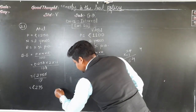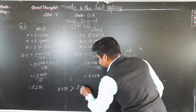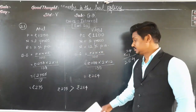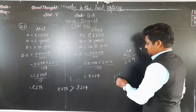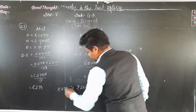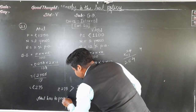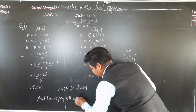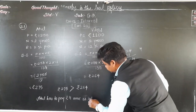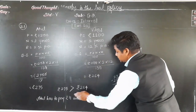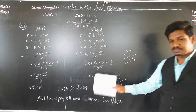Atul has to give more interest — rupees 275 is greater than rupees 264. The difference is 275 minus 264 equals rupees 11. So Atul pays rupees 11 more as interest. The difference between their interest amounts is rupees 11.